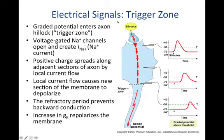We talked about the concept of a trigger zone in an axon, where a stimulus comes down, leads to excitatory postsynaptic potentials, and that depolarization would spread through the tissue getting smaller and smaller. But if it was still more positive than the threshold potential at the axon hillock, that would lead to the opening of voltage-gated channels and the influx of positive current, ultimately leading to the action potential.